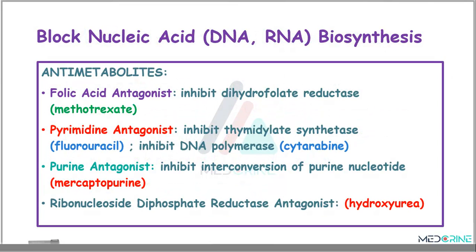Drugs which block nucleic acid biosynthesis — the main class here is antimetabolites. Under antimetabolites, we have folic acid antagonists, which work by inhibiting dihydrofolate reductase, for example methotrexate. Another antimetabolite is pyrimidine antagonists, which work by inhibiting thymidylate synthetase, for example fluorouracil; they can also work by inhibiting DNA polymerase, like cytarabine. Another antimetabolite is purine antagonists, which work by inhibiting interconversion of purine nucleotides — an example is mercaptopurine. And lastly, we have ribonucleoside diphosphate reductase antagonists, that is hydroxyurea, which is also used in sickle cell treatment.